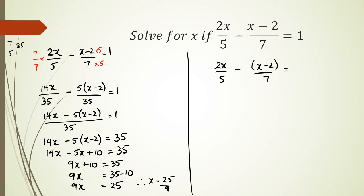So this is the one where I multiply this fraction by 5, this one by 5, and this number by 5. And what I will notice is the two 5s are canceling out each other, which leaves me with 2x minus 5 times x minus 2 over 7 equals 5.